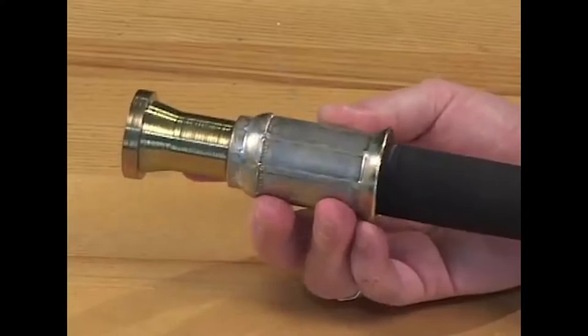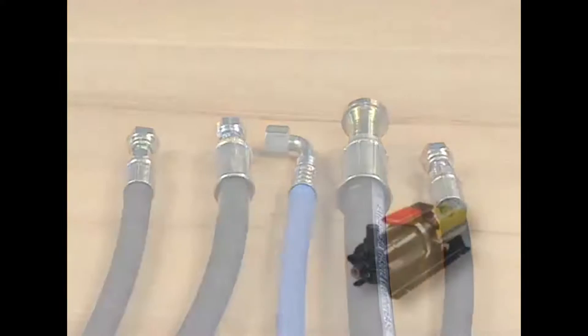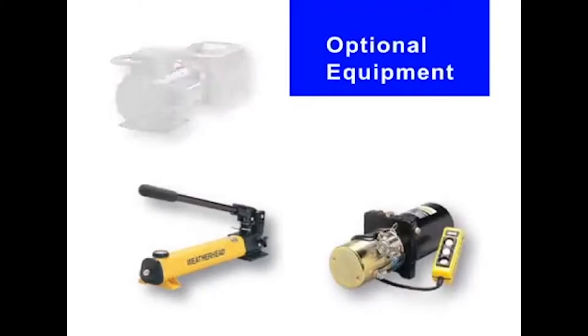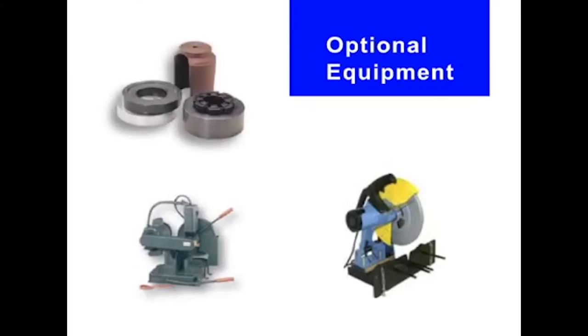All ColoCrimp models, when properly set up and operated, produce quality Weatherhead hose assemblies quickly and easily. In addition to the actual ColoCrimp machines, Weatherhead offers a line of optional equipment including a wide range of pumps, hose cutters, shop press tooling kits, and specialty saws.